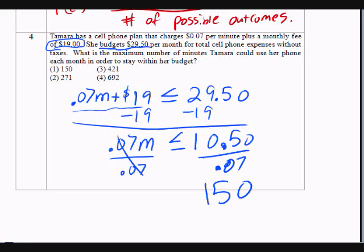Okay. Yes, that's correct. So, it's 150. Alright. It's 10.50 divided by .07. And that's minutes. So, the minutes per month that she must, you know, the maximum amount of minutes she can use for her cell phone plan is 150. Okay? If she uses 150, she's going to pay $29.50 per month. If she uses less, it would be less than that. But the maximum she can use is 150 here. And that's my answer. Choice one.